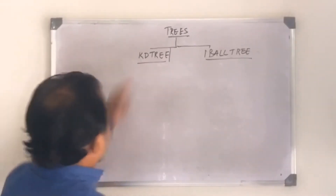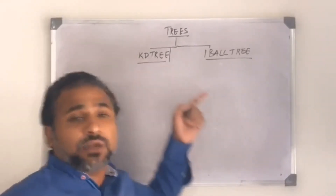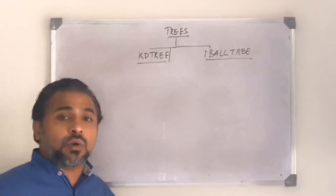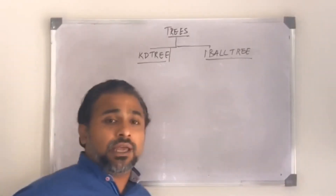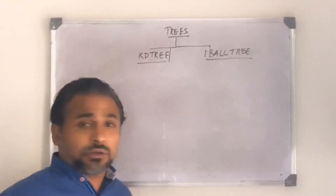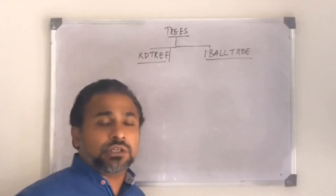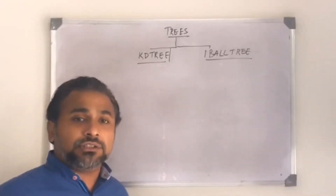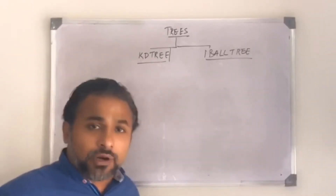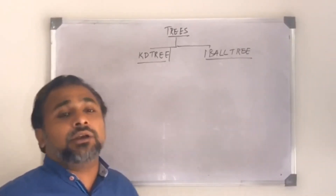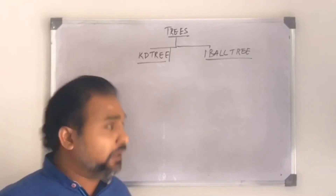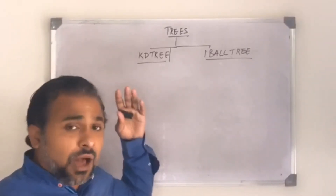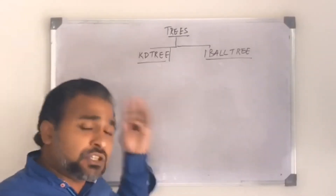KD tree — K stands for number of dimensions. So if you're dealing with two coordinates it's a two-dimensional KD tree. If you are dealing with a hundred dimensions or a hundred coordinates it'll be called a hundred-dimensional tree. Now let's see how a tree is going to help you in reducing the computational cost.